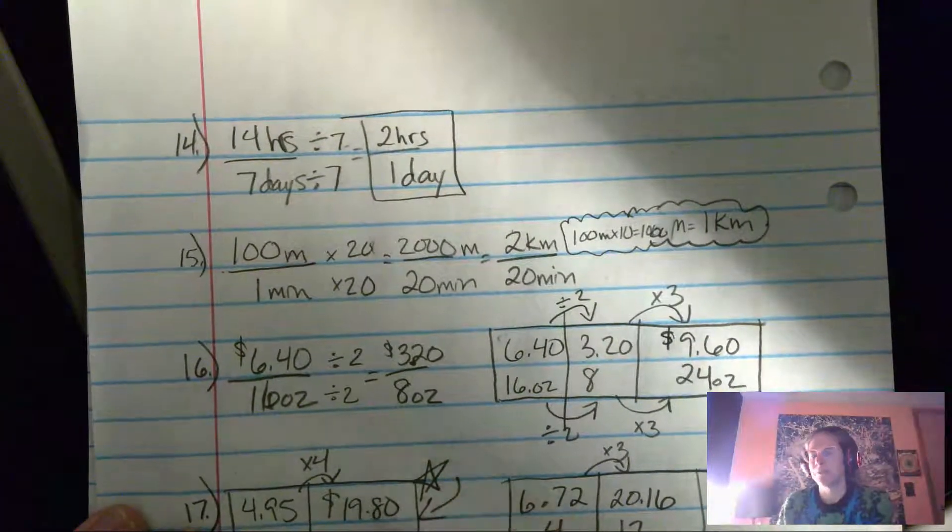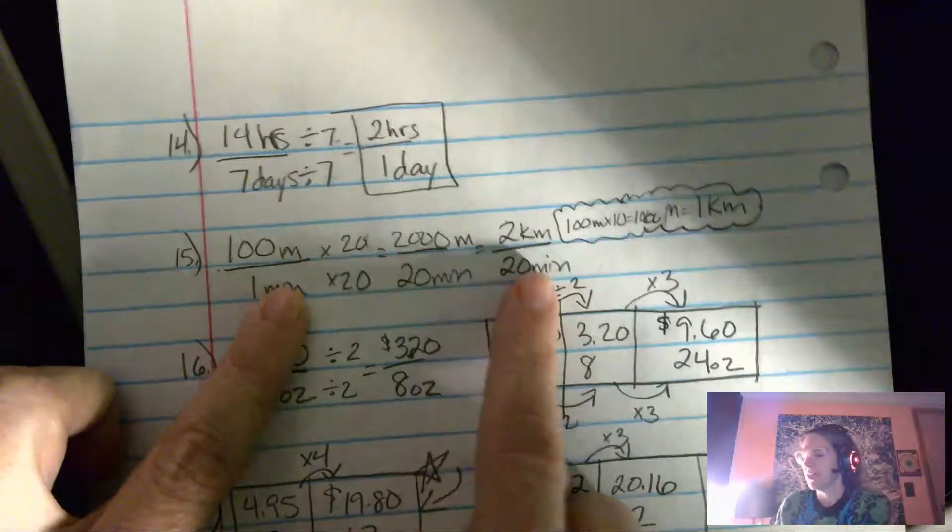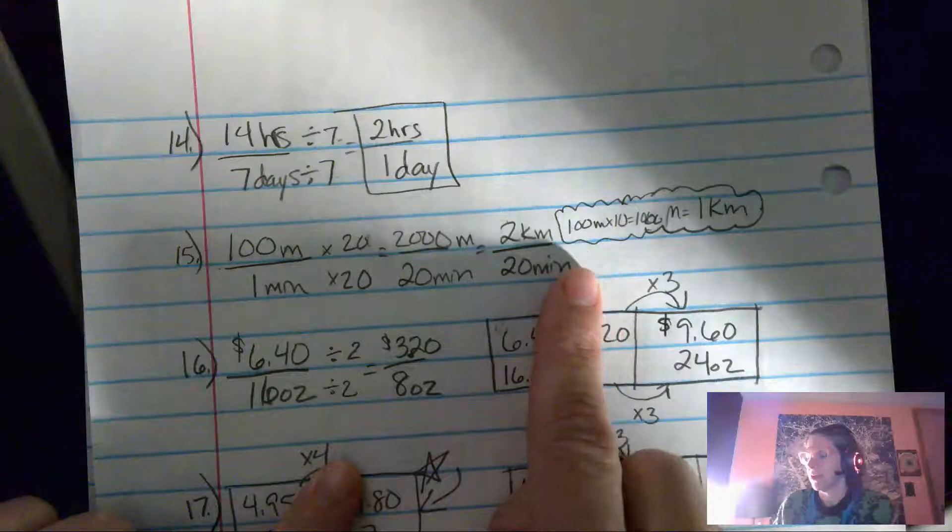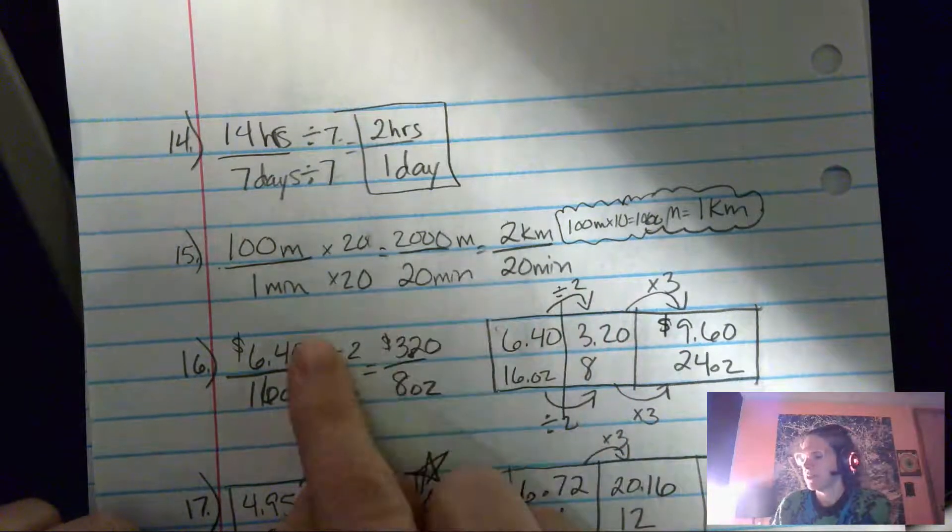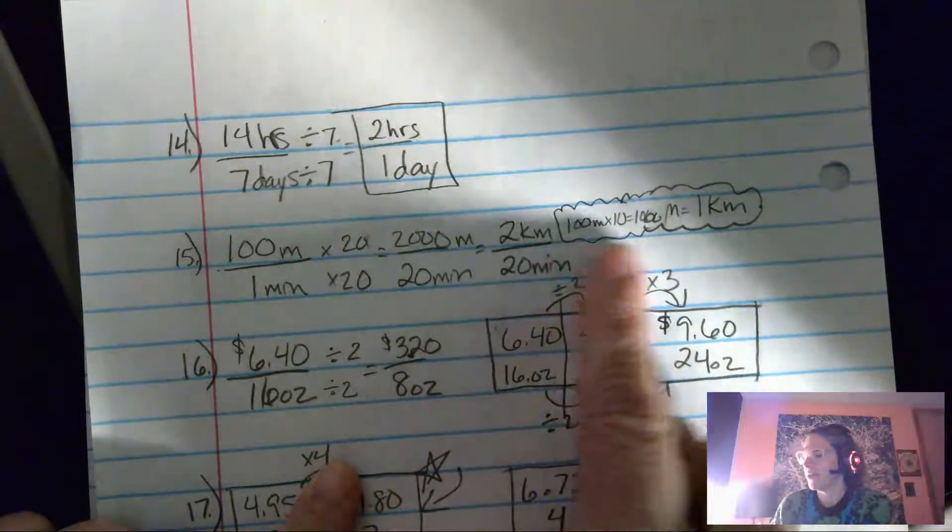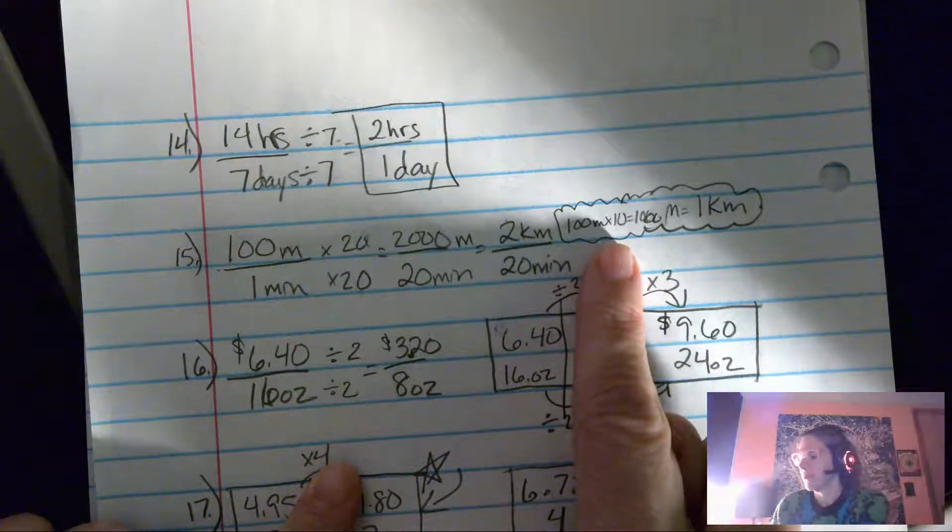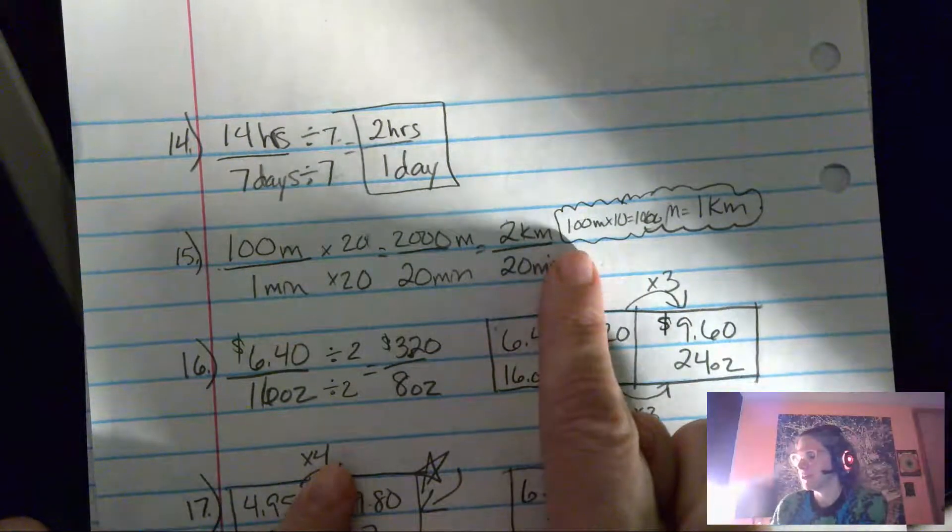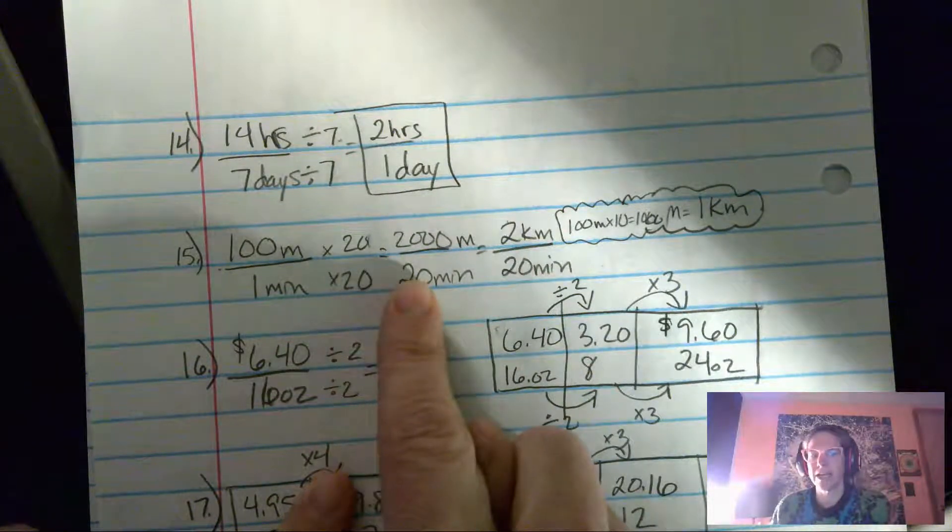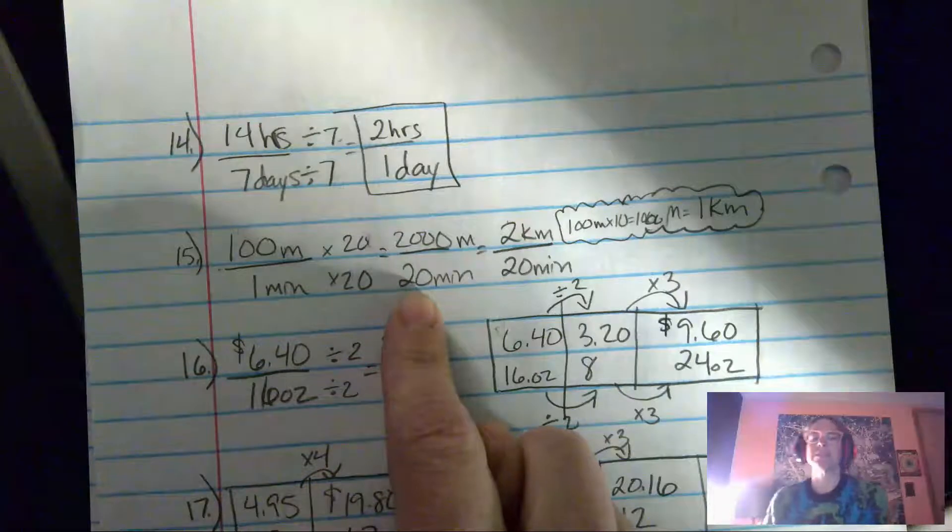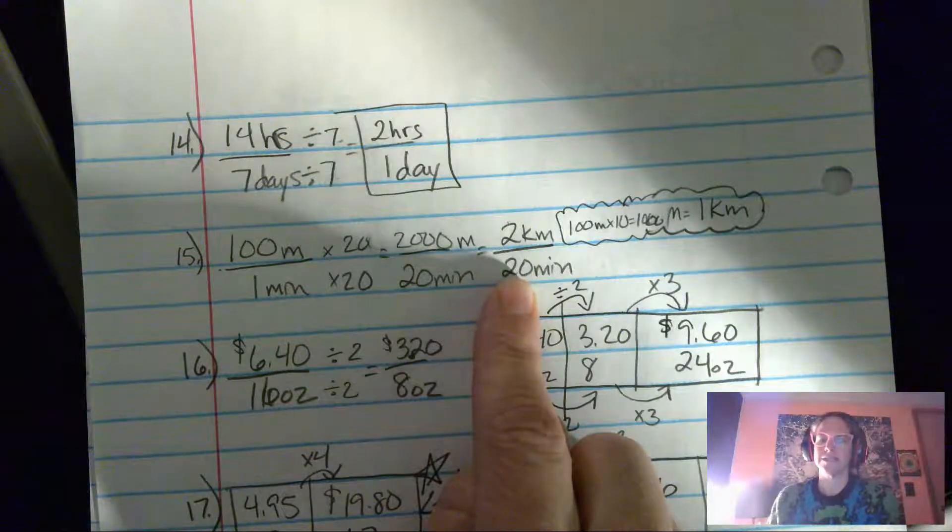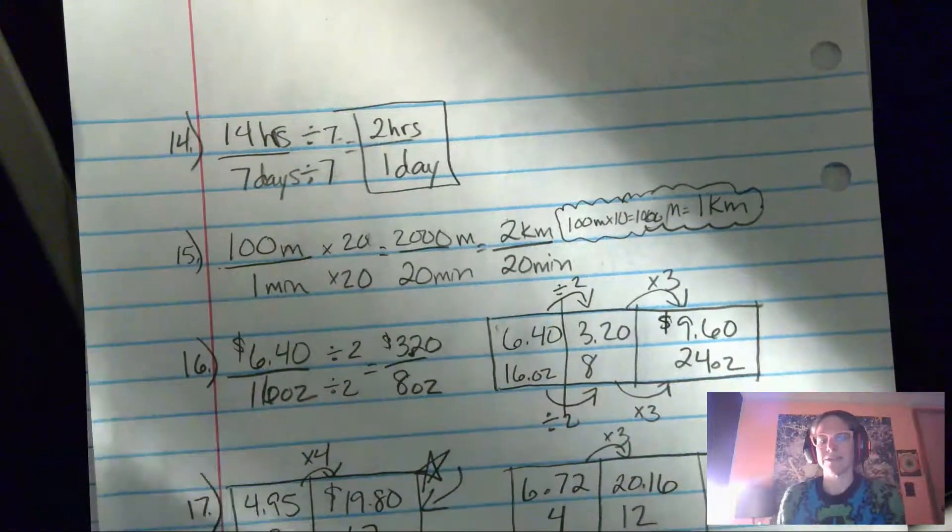Number 15 was a little bit tricky because in order to go from meters to kilometers, you have to know that there are a thousand meters per kilometer. So in order to get from 100 meters to 1000 meters, I had to multiply by 10. But in order to get from 100 meters to 2000 meters, I had to multiply by 20. So if I multiply both of these by 20, I get 2000 meters per 20 minutes. 2000 meters is the same as two kilometers, two kilometers in 20 minutes. That is my answer, this 20 minutes part.